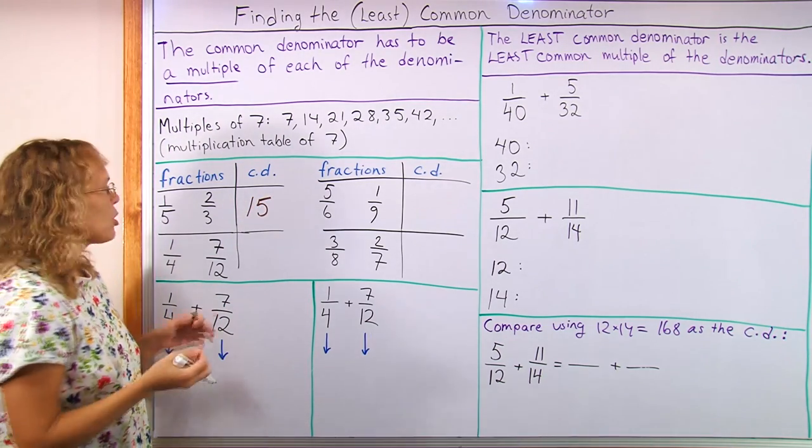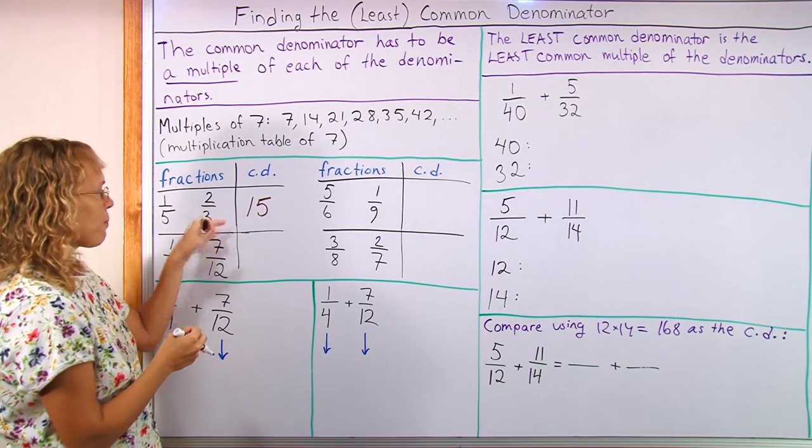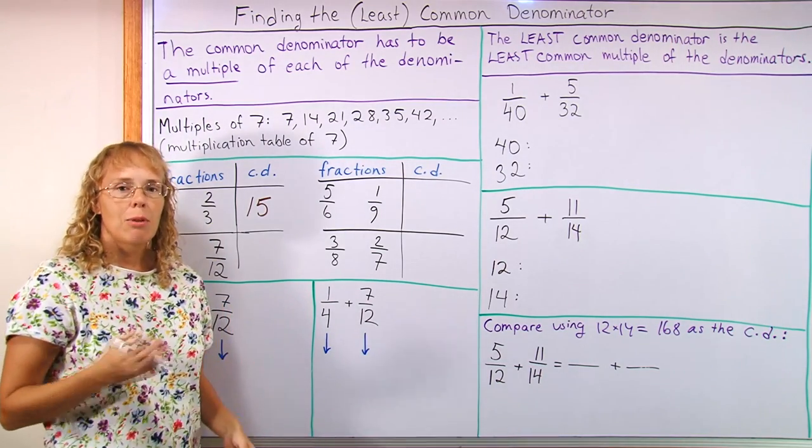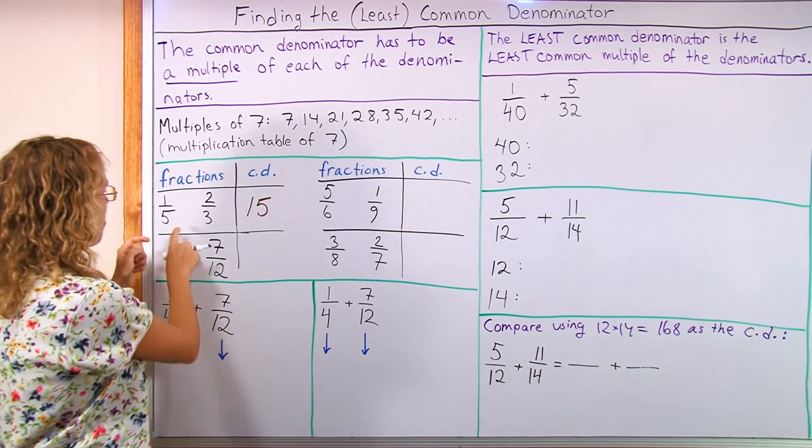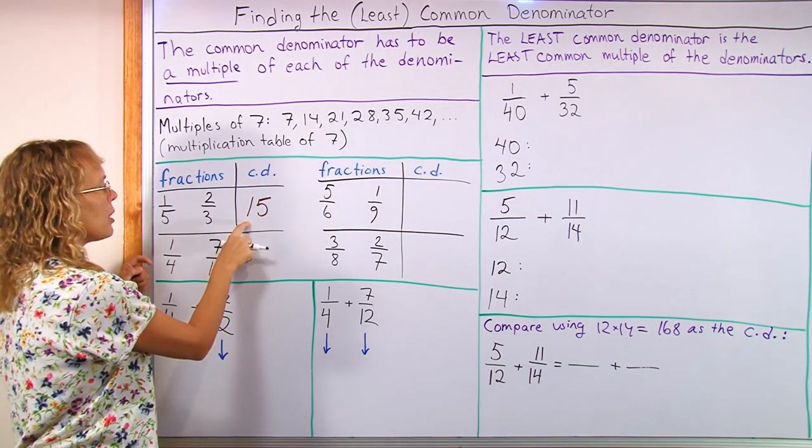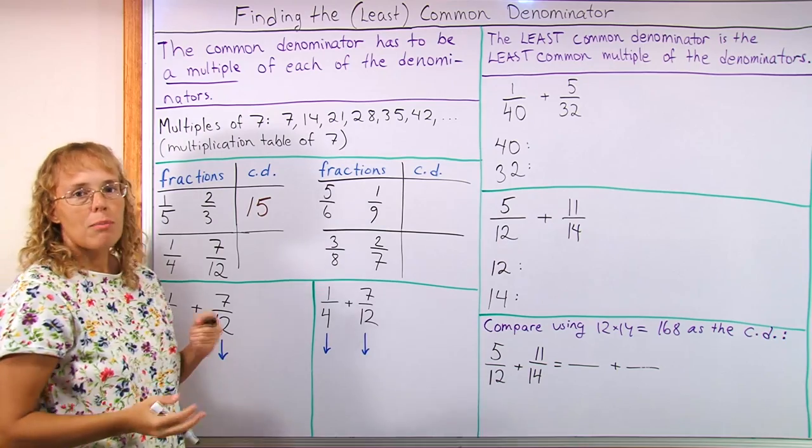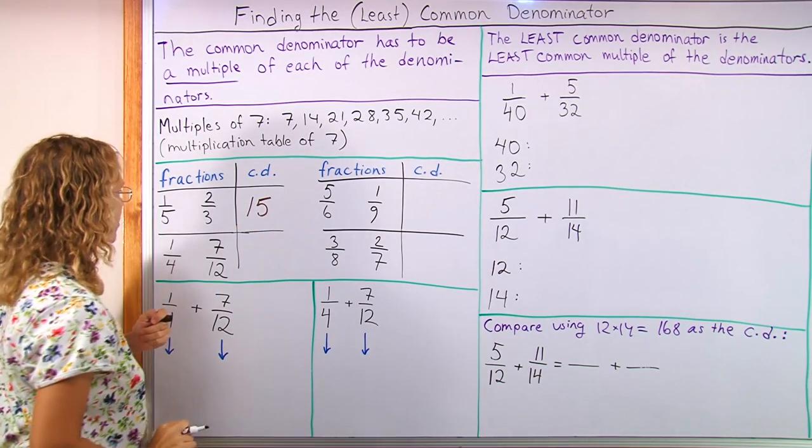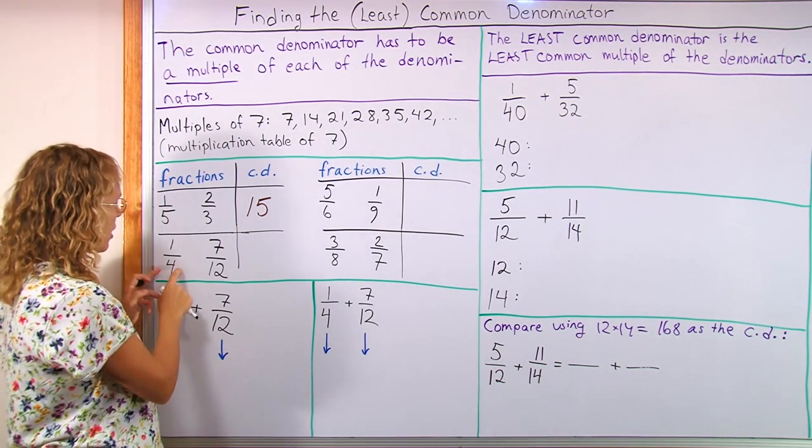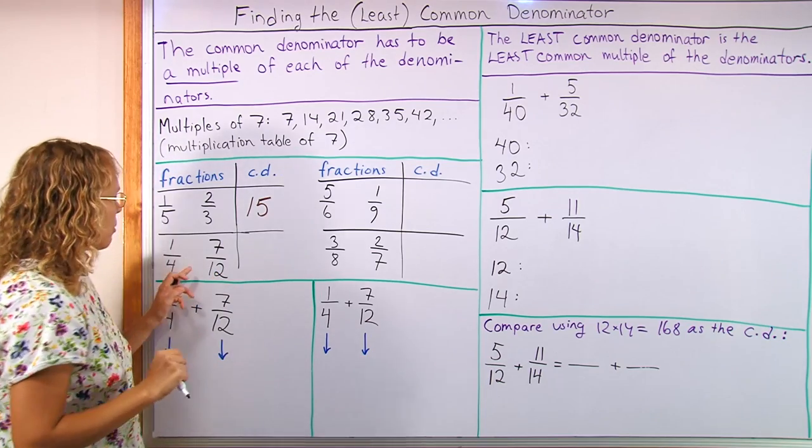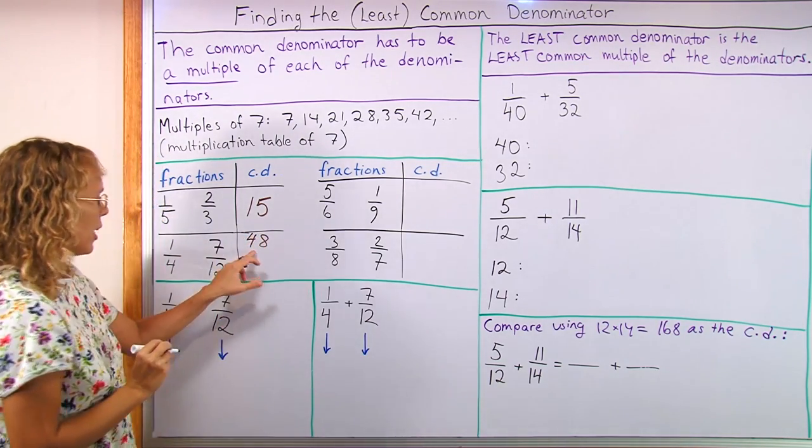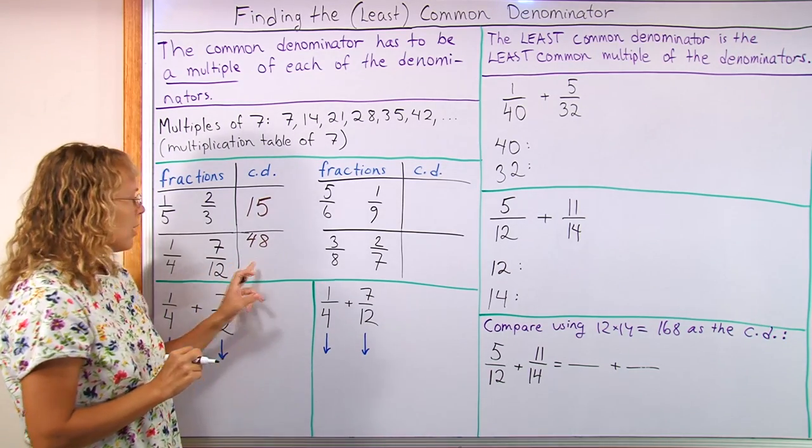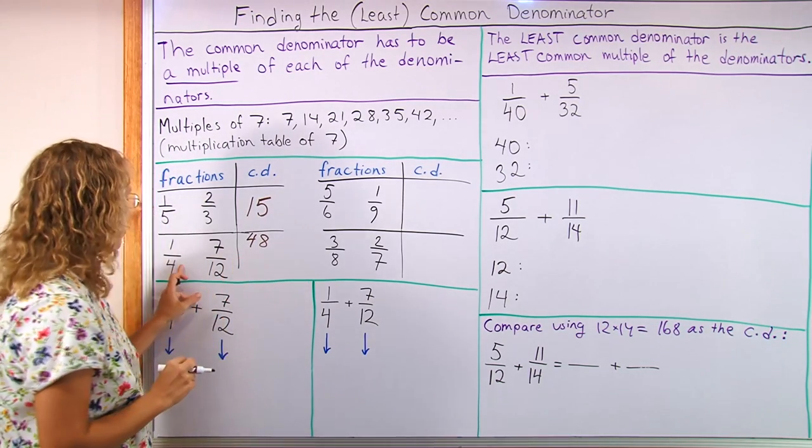15 is also, it happens to be 5 times 3. And that's one quick way to always find a common denominator is to multiply the denominators. You'll always get a common multiple that will work, a common denominator. Here's another example, 4 and 12. See, we could go 4 times 12, 48, right? And 48 is in the multiplication table of 12 and it's in the multiplication table of 4.